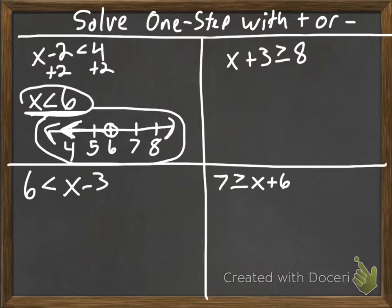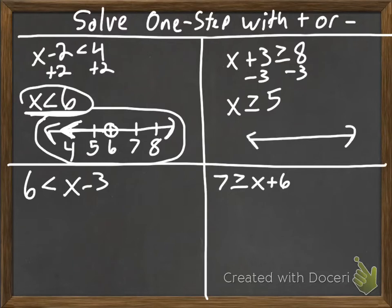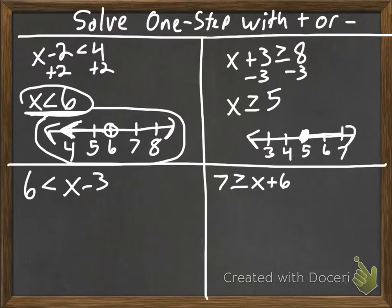For the top right: x plus 3 is greater than or equal to 8, so we subtract 3 and get x is greater than or equal to 5. We draw the number line with 5 in the middle — 3, 4, 5, 6, 7. Since it's greater than or equal to, we put a closed dot at 5, and greater than 5 goes to the right.